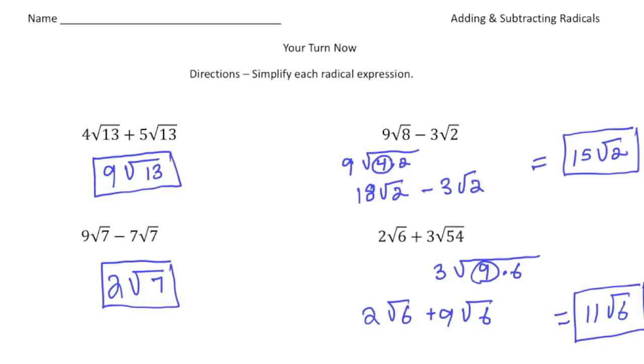Welcome back. Let's see how I did these practice problems. To save time, I've already done the workout. Here we have 4 radical 13 plus 5 radical 13. Because what's inside the radical sign is the same, this is pretty easy. We add the numbers in front. So 4 plus 5 gives us 9. So 9 radical 13 is the answer.